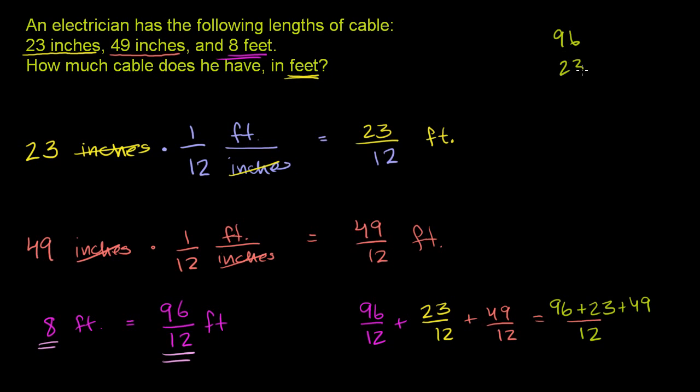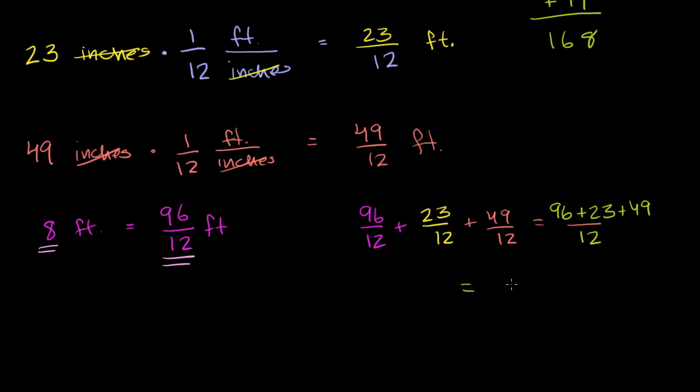So 96, 23, 49. We have to add it up. 6 plus 3 is 9, 9 plus 9 is 18. 1 plus 9 is 10, 10 plus 2 is 12, 12 plus 4 is 16. So that's 168. So this expression right here is equal to 168 over 12, which is a valid answer.